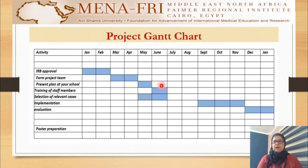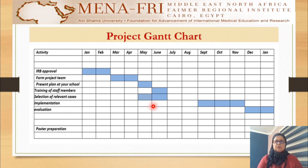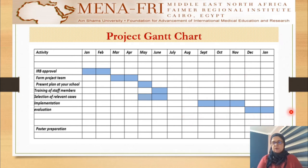This is my project Gantt chart. IRB approval was taken, formulation of the project team already done, presentation of the plan to the college and the training of staff members done, selection of relevant cases was done and approved from the college board. I actually went faster than the proposed Gantt chart, already through the implementation phase and evaluation that were supposed to be done during the period from September 2021 to January 2022.